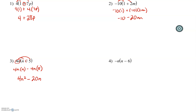4n times n would be 4n squared, minus 4n times 5 would be 20n. From yesterday's lesson, when you multiplied variables together you added the exponents. If there's no exponent written, we know it's an exponent of 1, so 1 plus 1 would be 2 — notice there are two n's. n squared and n are not like terms, so we cannot combine them. That is our final answer.